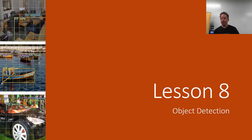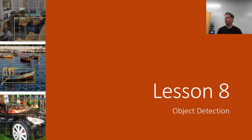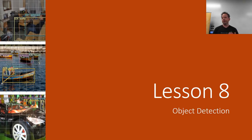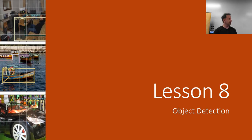We're going to be talking about object detection today, which refers to not just finding out what a picture is a picture of, but also whereabouts that thing is. The idea of each lesson in this part is not so much because I particularly want you to care about object detection, but rather because I'm trying to pick topics which allow me to teach foundational skills. Object detection is going to be all about creating much richer convolutional network structures with a lot more interesting stuff going on, and a lot more FastAI library customization to get there.